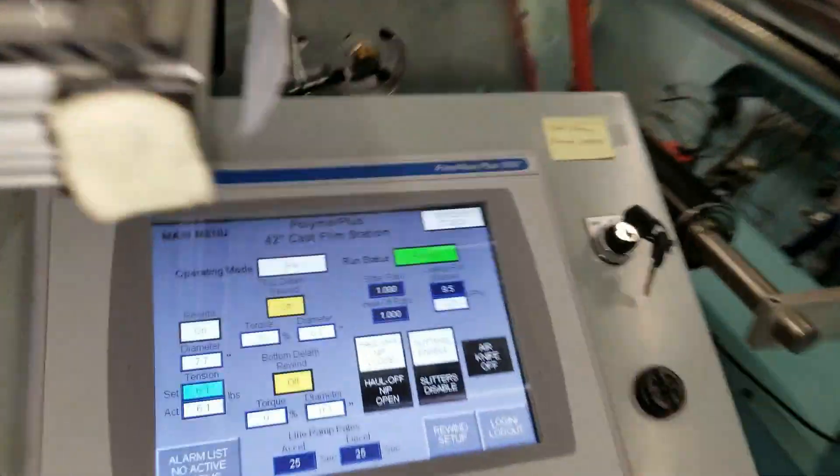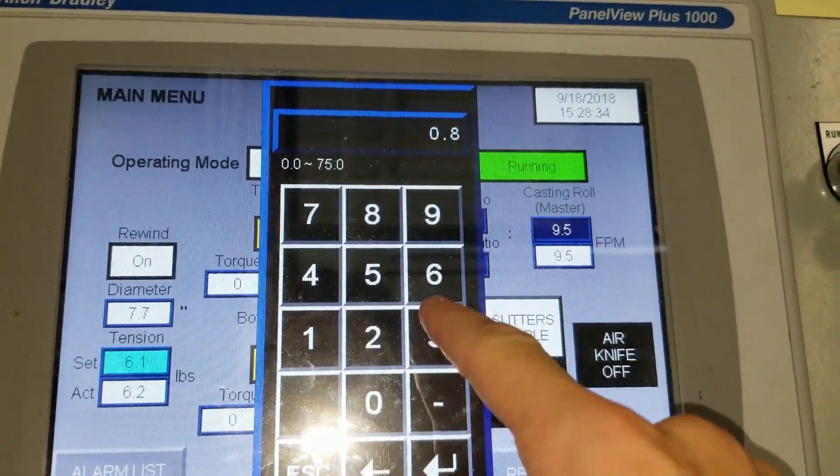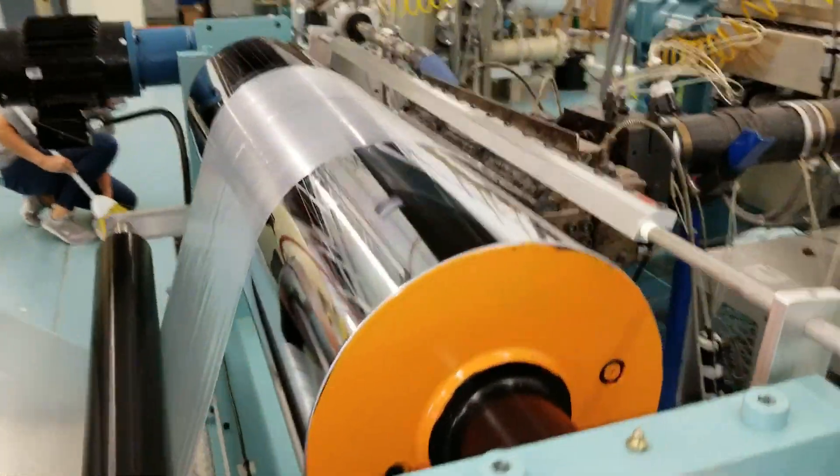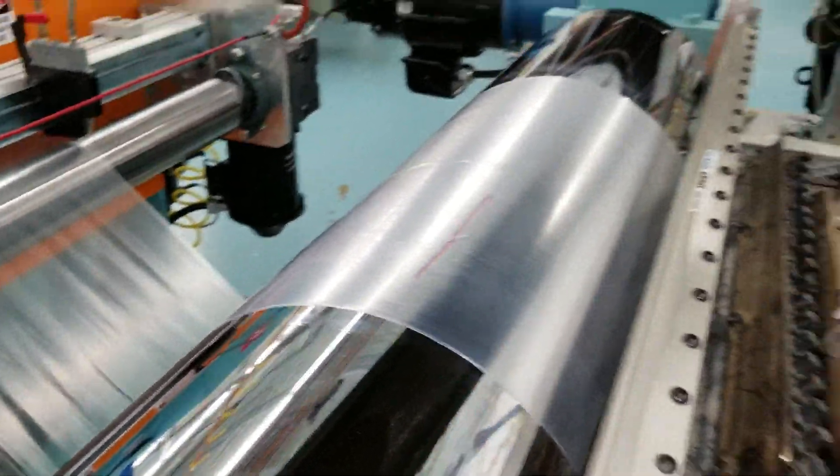The operator's going to make a change to the line speed to change the thickness of the film. So he's going to slow the line down and that's going to increase the thickness of the film to help him get on target. You can see he's going to mark the film so that he knows where the change was made.